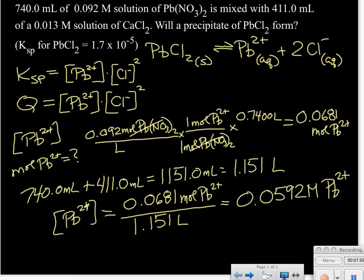That lead ion concentration of 0.0592 molar is the first number we plug into our Q expression. If you want to write this down, you may want to pause the video now, as we'll be erasing this information and moving on to calculate the chloride ion concentration.